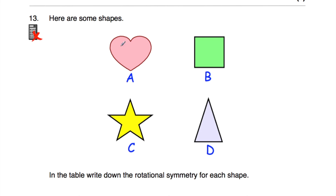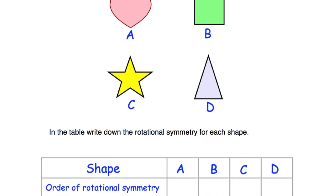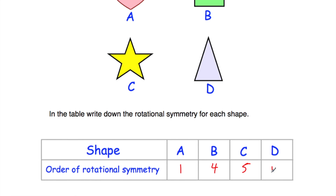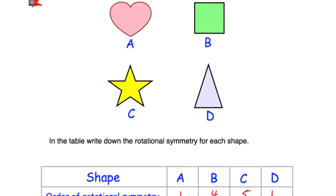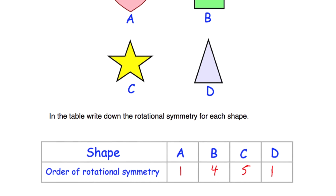Question number 13: we've got a heart, a square, a star, and an isosceles triangle, and we need to write down the order of rotational symmetry for each. The heart lands on itself once — order 1. The square lands on itself four times — order 4. The star lands on itself five times — order 5. The isosceles triangle lands on itself just once — order 1.